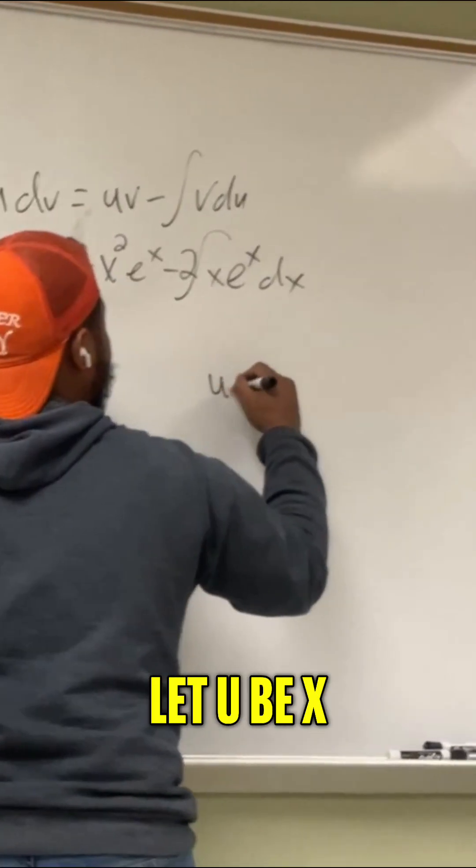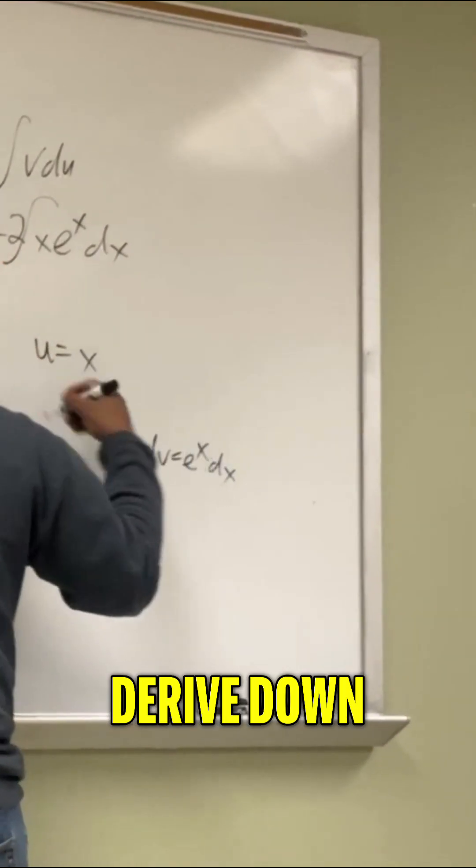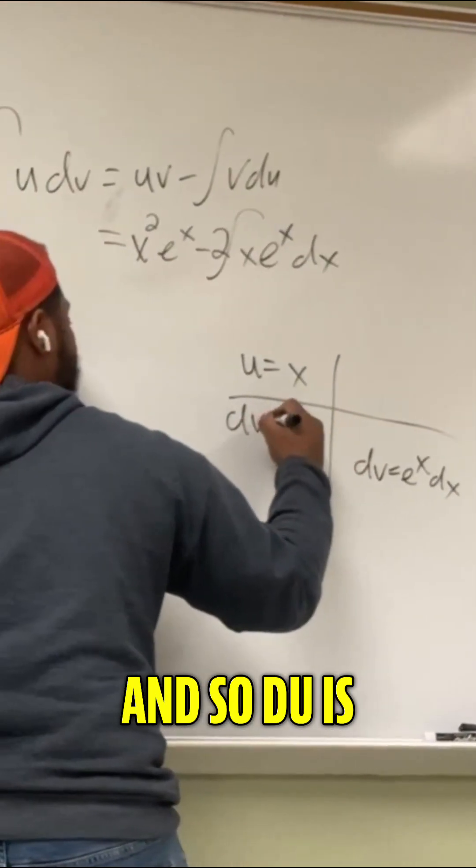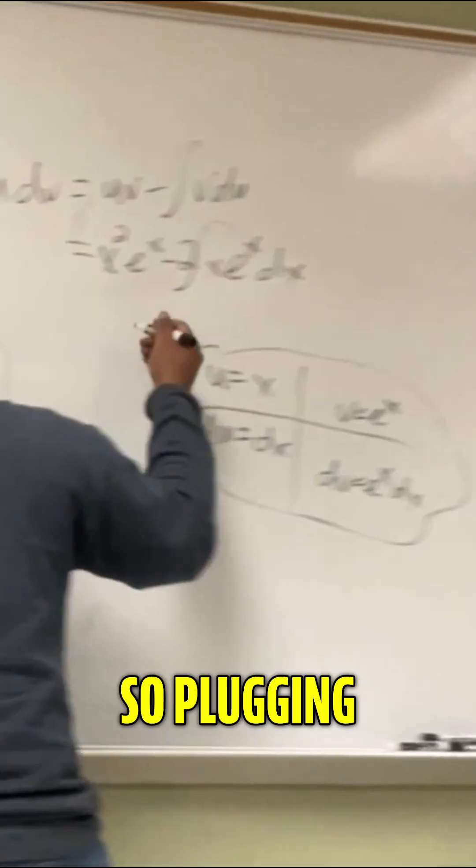Now for this one, we use by parts again. So this time we'll let u be x, and then dv be e to the x dx. Derive down, integrate up. And so du is going to be just dx, and v is going to be e to the x.